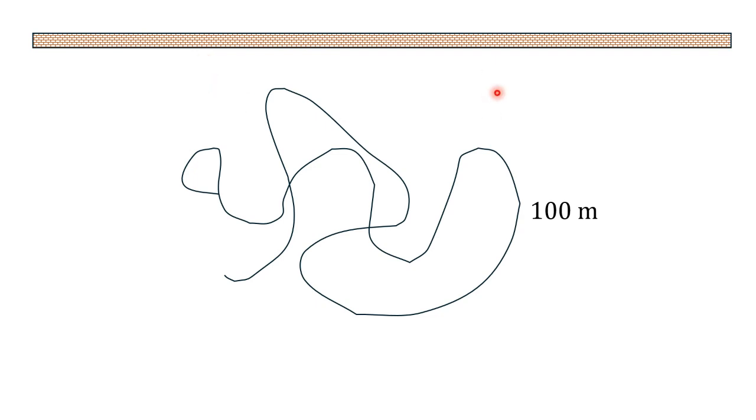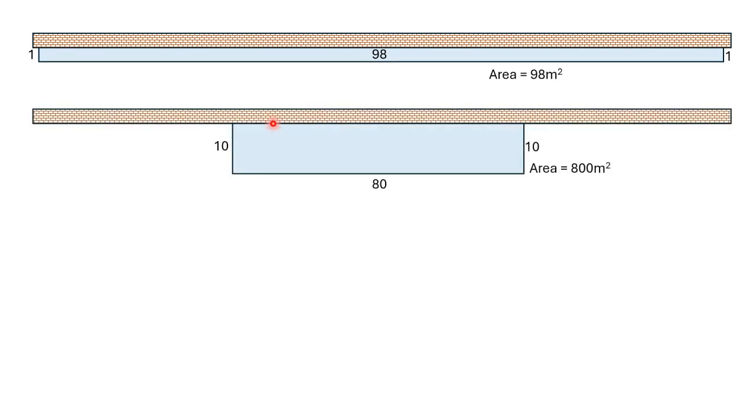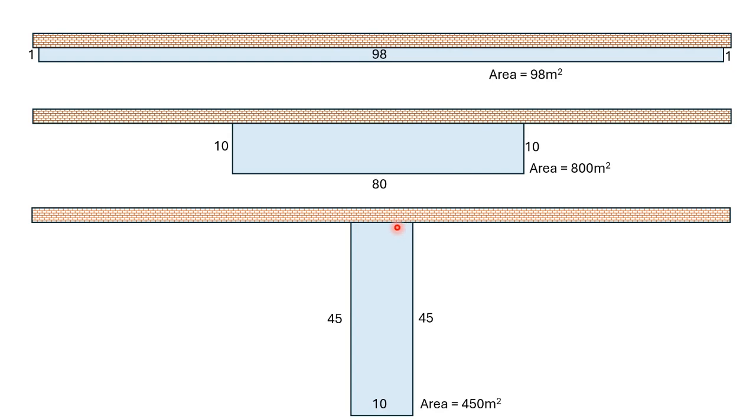So for example, I could construct the following, which would be an enclosure of 1 meter by 98, 98 square meters. Or the following, 10 by 80, 800 square meters. Or even the following, 45 by 10, 450 square meters.